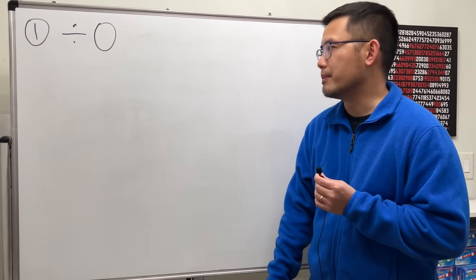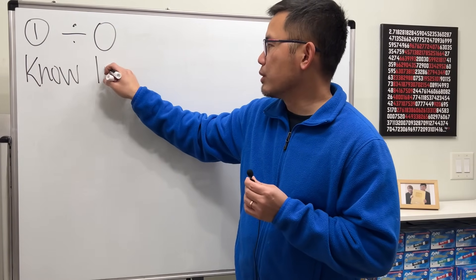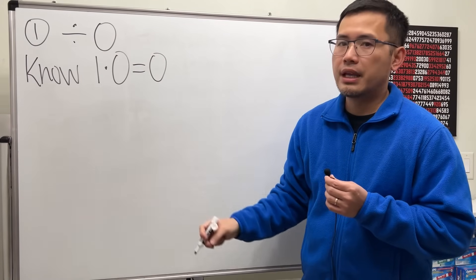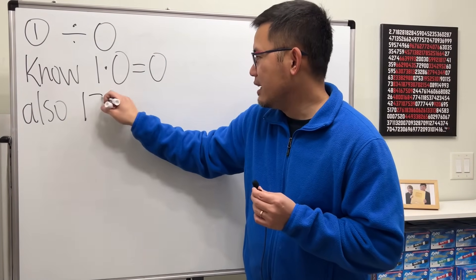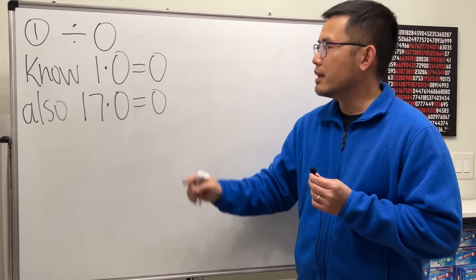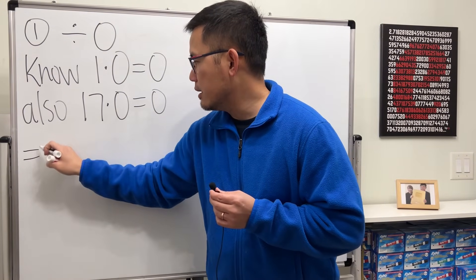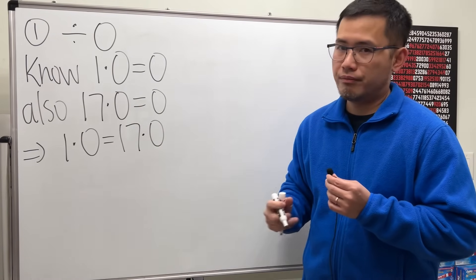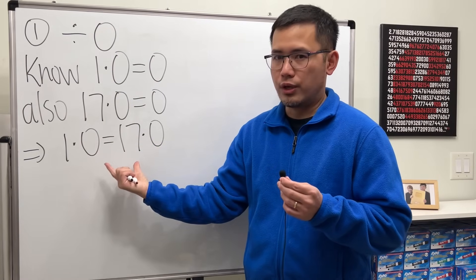First, let's pick a number — let's say one — and multiply that by zero. We know that one times zero equals zero. Then let's pick another number, 17. Multiply that by zero and we also get zero. Since both equal zero, we can put them together: one times zero equals 17 times zero.